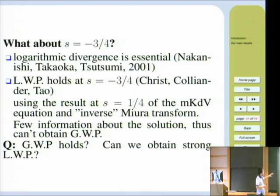So the original estimate could not give the result at this point. However, in another sense, local well-posedness in some weak sense, in the sense of the limit of the classical solutions, was given by Christ, Colliander, and Tao. They used the inverse Miura transform and the result of mKdV equations. However, they cannot prove global well-posedness.